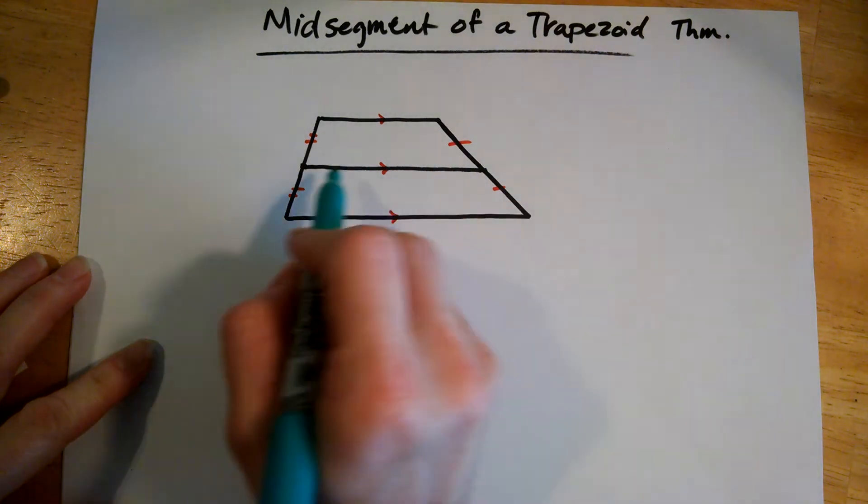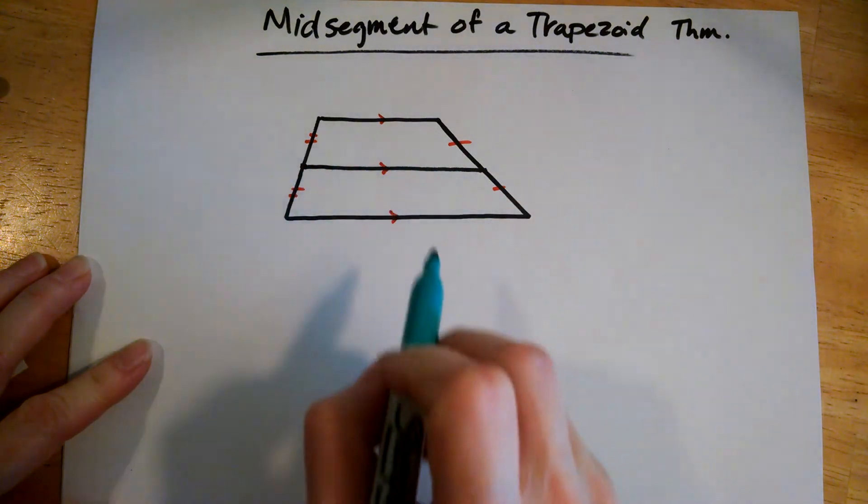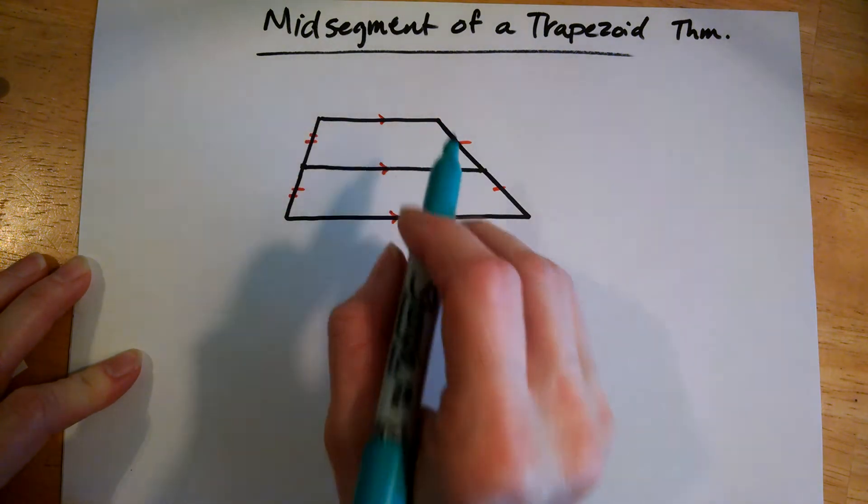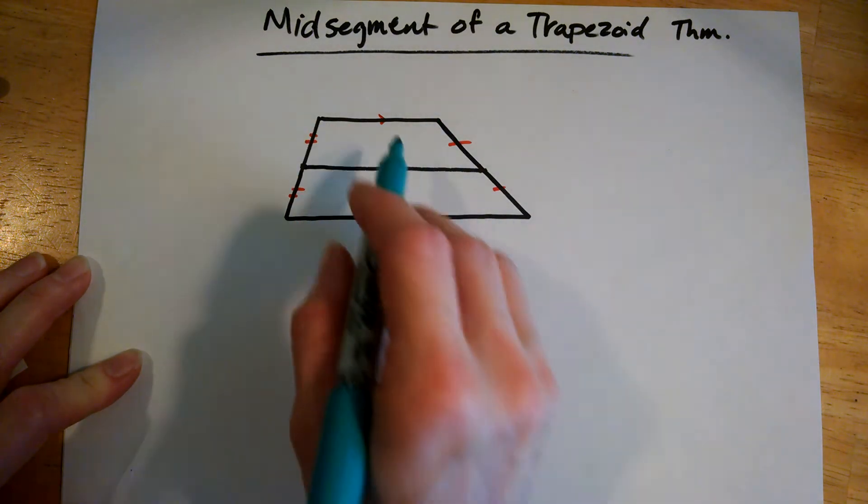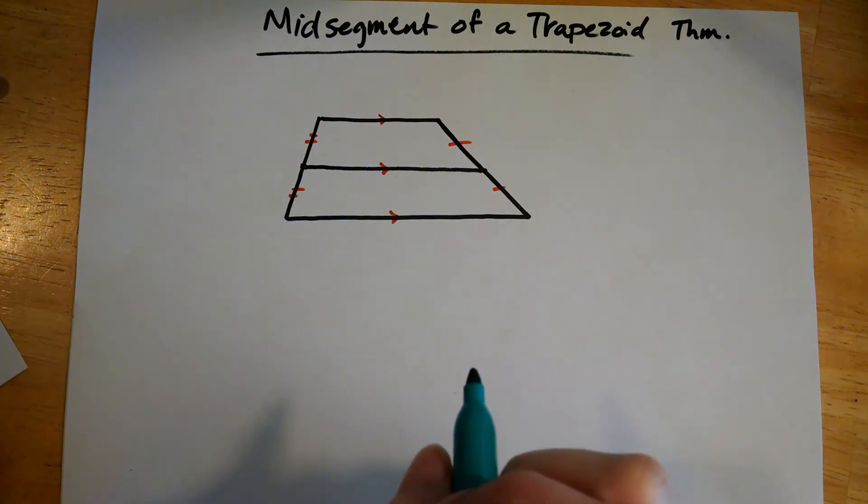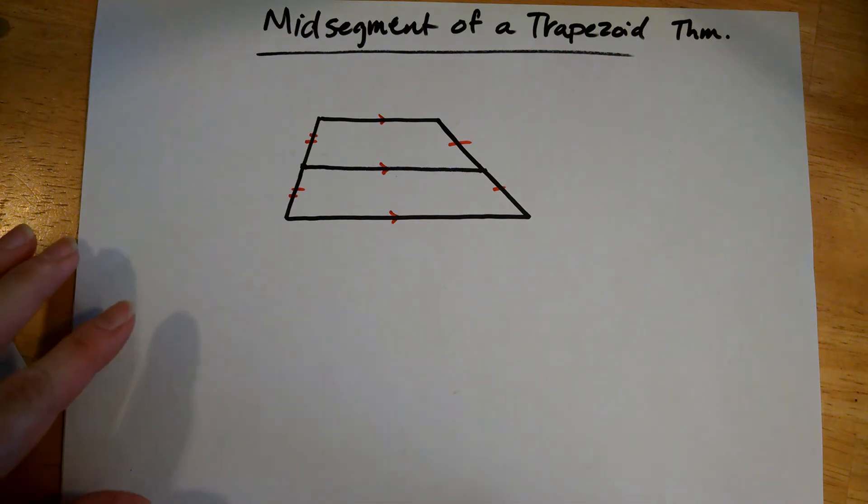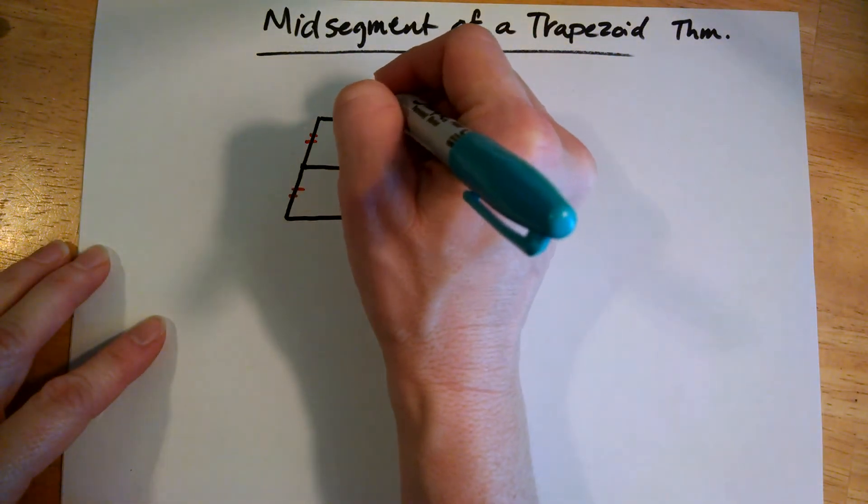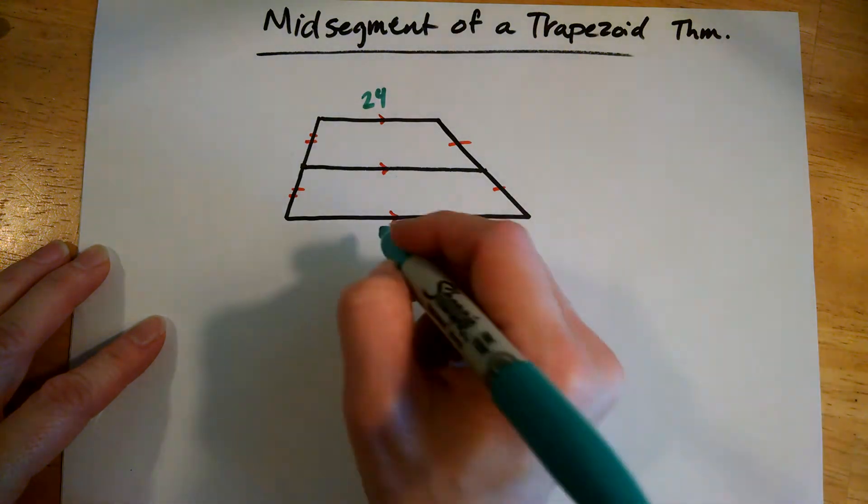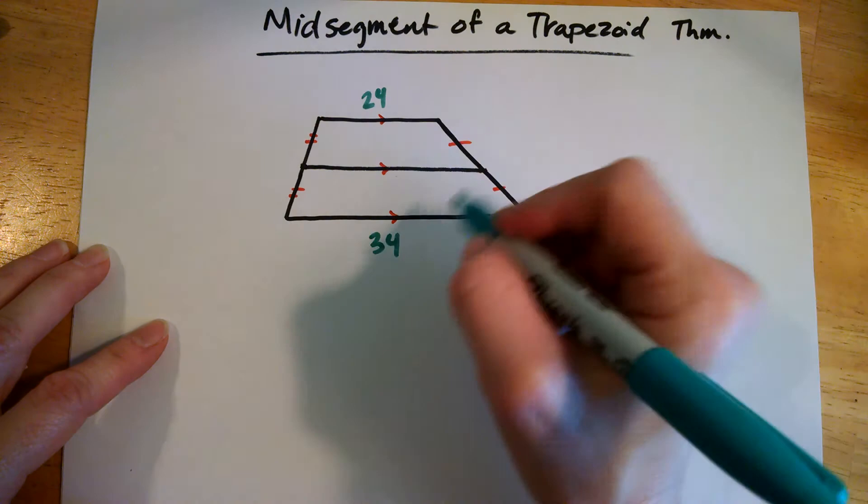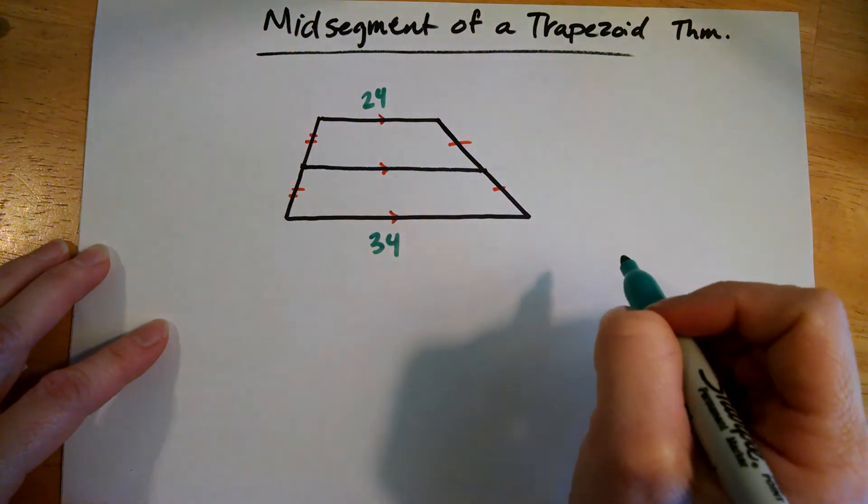This mid-segment here is the average of the little base plus the big base. So if we add up those bases and divide by 2, we'll get the mid-segment. So let's put some numbers here and figure out what we have. We'll do 24 and let's say 34. So we're going to add those up and take the average and we'll find the mid-segment there.